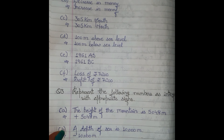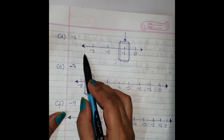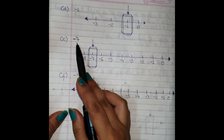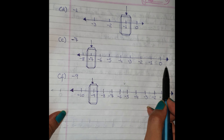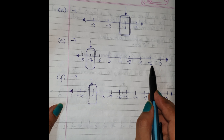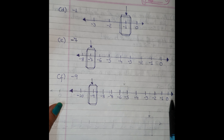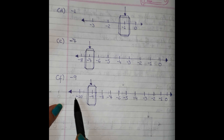For part d, minus one: zero comes at the end on the negative side. Mark minus one, minus two, minus three — draw a box on minus one. For part e, minus seven: zero at the last, move to minus eight, draw a box on minus seven. For minus nine: again zero at the last, move to minus ten, draw a box on minus nine. Remember — for negative numbers zero comes at the end; for positive, zero comes at the beginning.